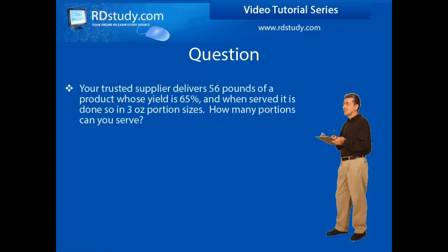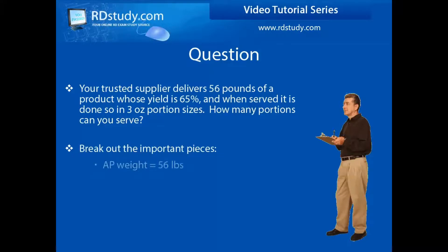Say for example, your trusted supplier delivers 56 pounds of a product whose yield is 65%, and when served it is done so in 3 ounce portion sizes. How many portions can you serve? Well let's break out the givens. The weight of the product as purchased is 56 pounds, the yield is 65% after all processing and prep work, and the end result is the serving size of 3 ounces.